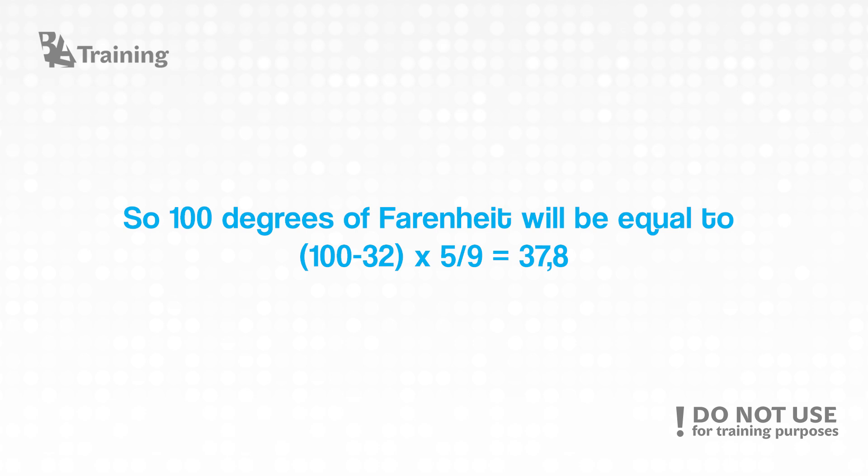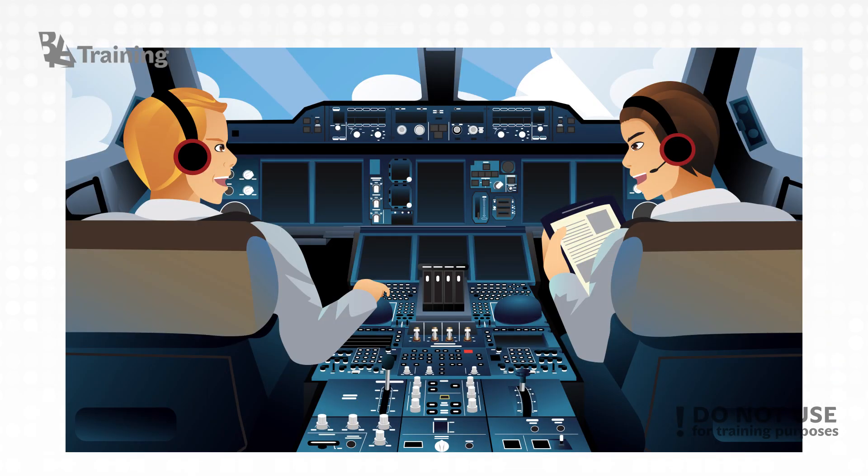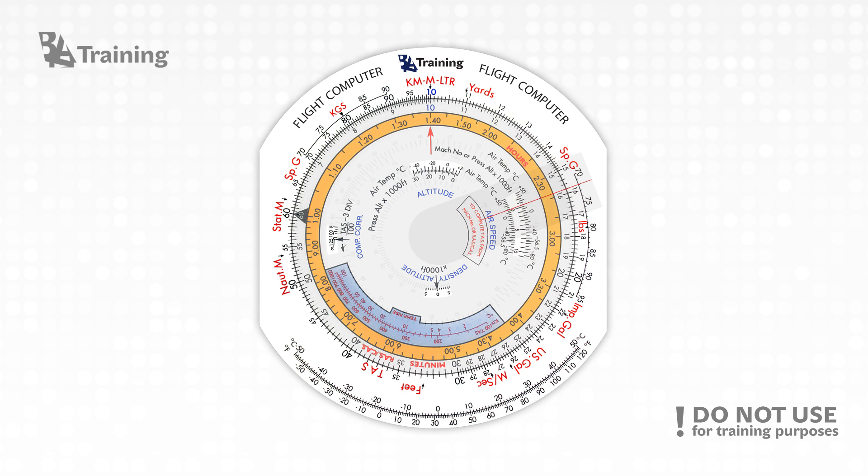That looks complicated, doesn't it? Imagine pilots sitting in the cabin and writing down long formulas to figure out their temperatures. But you know that there is an easier way and every aviation academy student should learn to use it. It's the CRP computer.